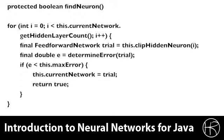The first thing that it does is it sets up a for loop. It's going to loop from zero up to the number of neurons in the hidden layer. For each layer, it's going to create a trial neural network. This is a neural network that has the particular hidden neuron clipped.